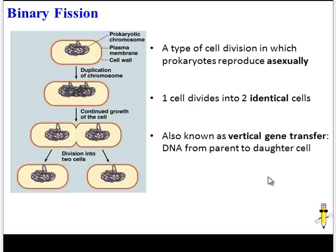This is also known as vertical gene transfer. Any type of reproduction is vertical gene transfer because DNA is being passed from the parent down the line to the daughter cells.